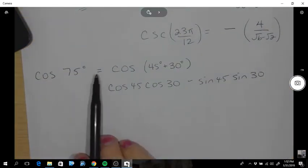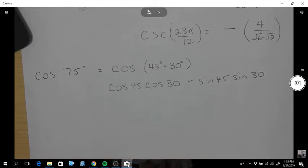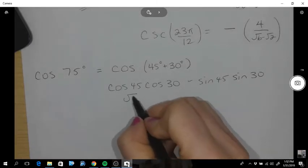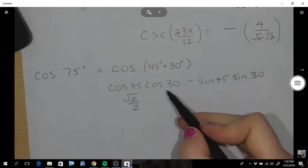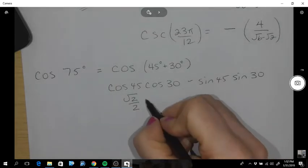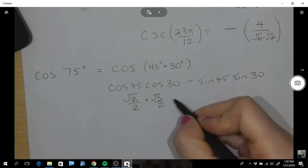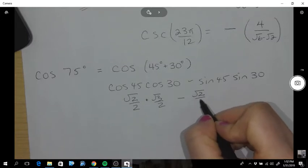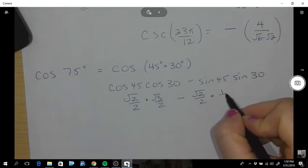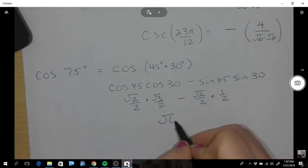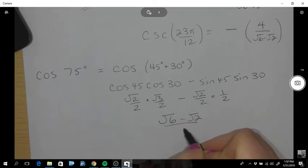So 75, you can use your exact value numbers to add. 15 you would subtract. So quickly, this is root 2 over 2. The cos of 30 is root 3 over 2 minus root 2 over 2 times 1 half. So this is root 6 minus root 2 over 4.